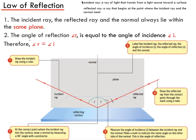Very quickly, a couple of definitions you should be aware of. An incident ray is a ray of light that travels from a light source towards a surface. In this diagram you can see this would be my incident ray. It's heading towards the surface, in this case sort of like a sheet of glass, a reflecting surface.